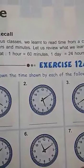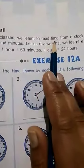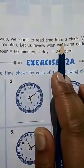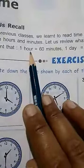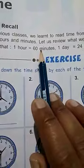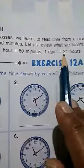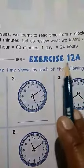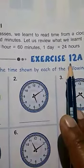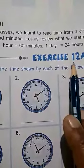In class 3, you have already learnt how to read time from a clock. You have also learnt that 1 hour equals 60 minutes, 1 day equals 24 hours. Exercise 12a is revision of what you have learnt in class 3.